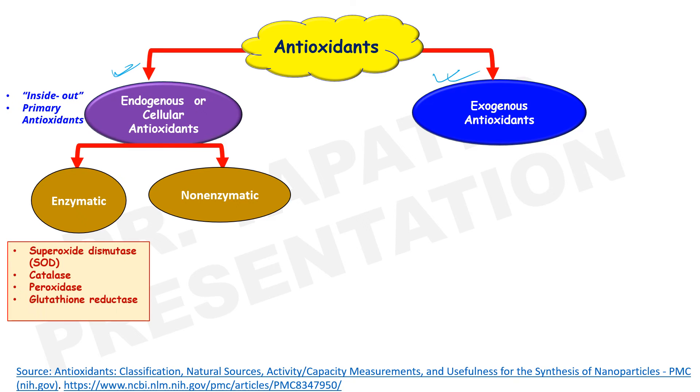Enzymatic antioxidant examples are superoxide dismutase or SOD, catalase, peroxidase, and glutathione reductase.